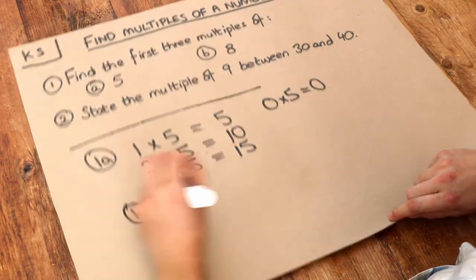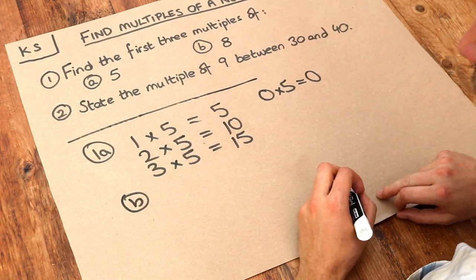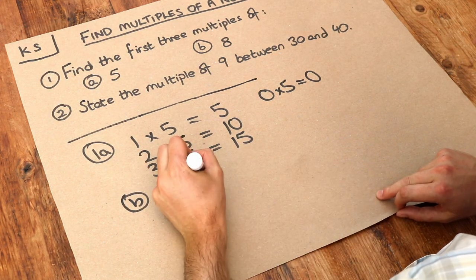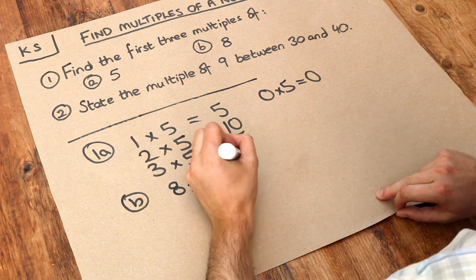What about B? Find the first three multiples of eight. If we have one lot of eight, that is eight. If we have two lots of eight, two times eight is sixteen. And if we have three lots of eight, three times eight is twenty-four.